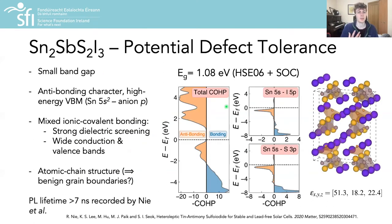Thinking about the potential defect tolerance of this material, we identified several material properties that could promote this behavior, which is a small electronic band gap, an antibonding character, high-energy valence band maximum due to the interaction of the tin 5s² lone pair with both the iodine and sulfur P states at the top of the VBM.